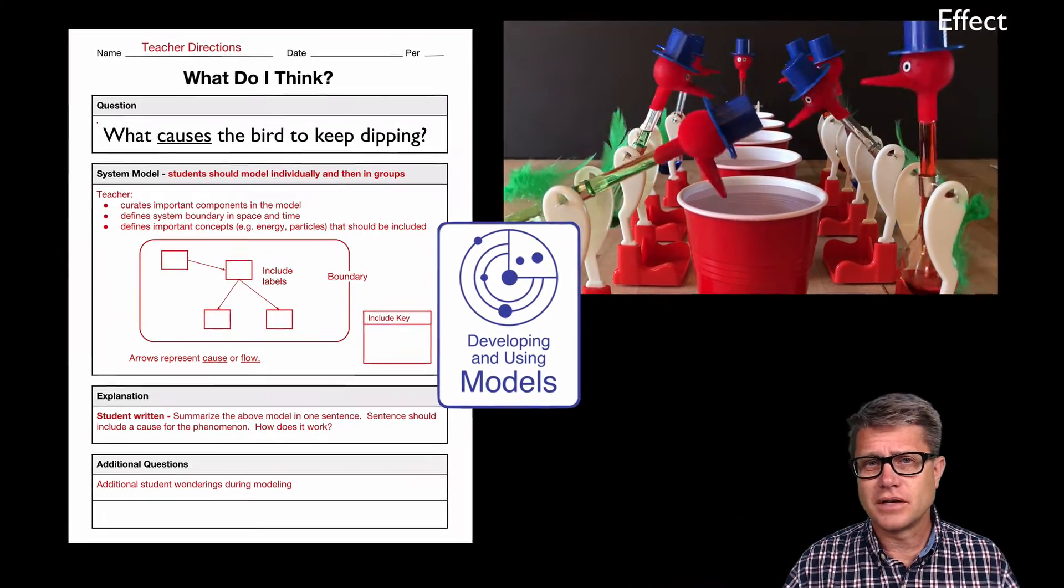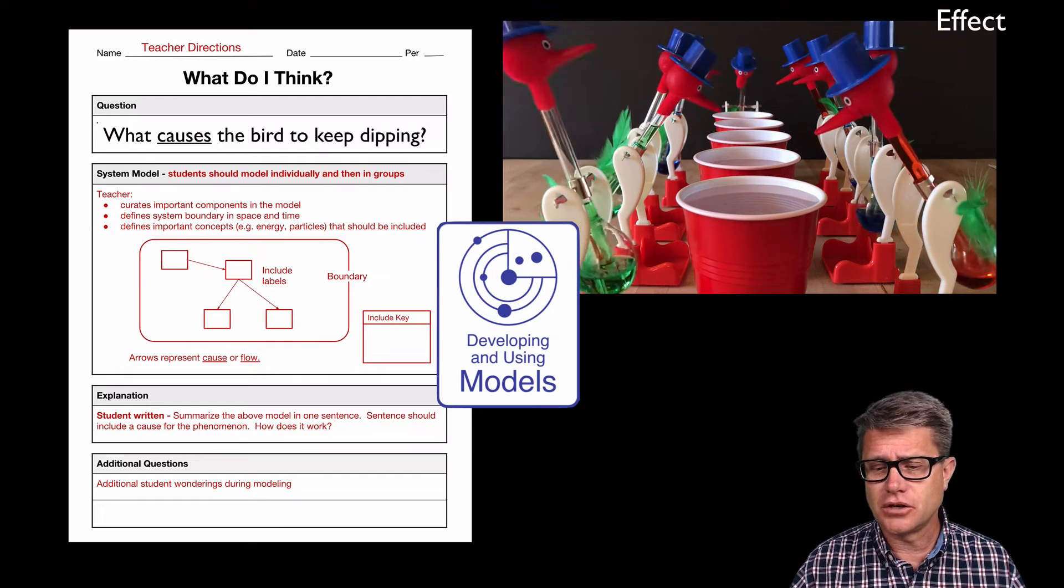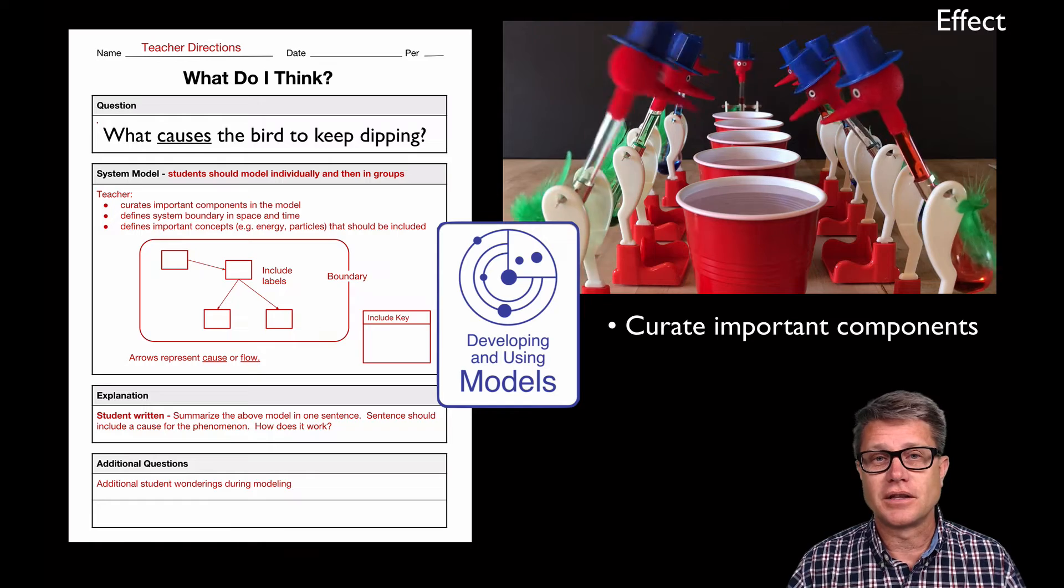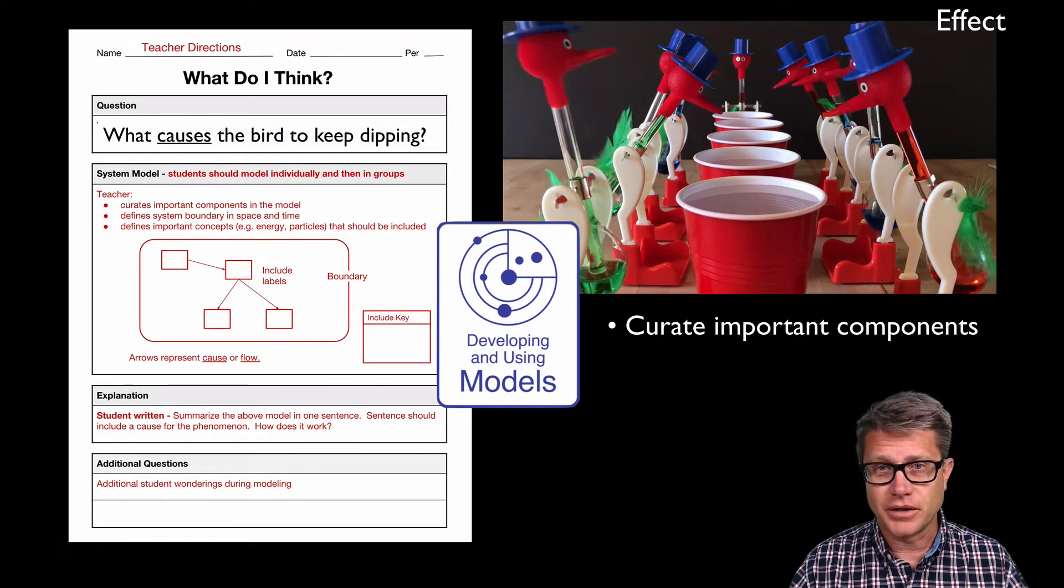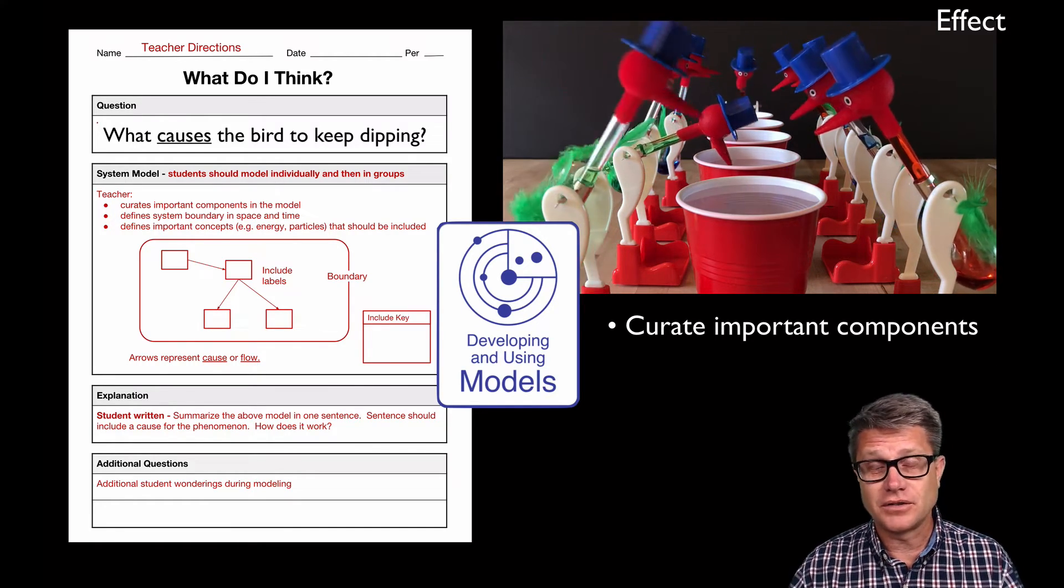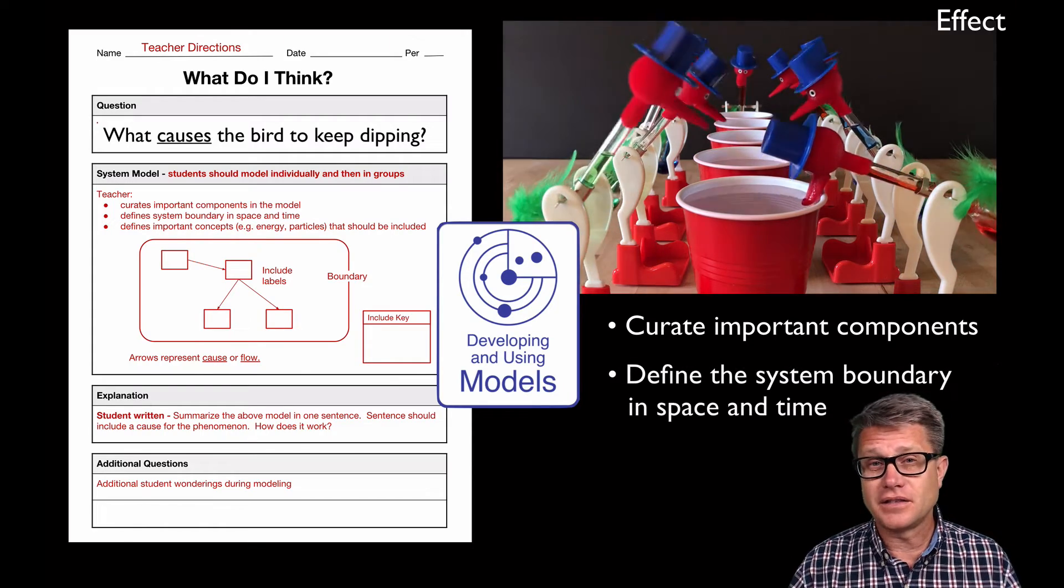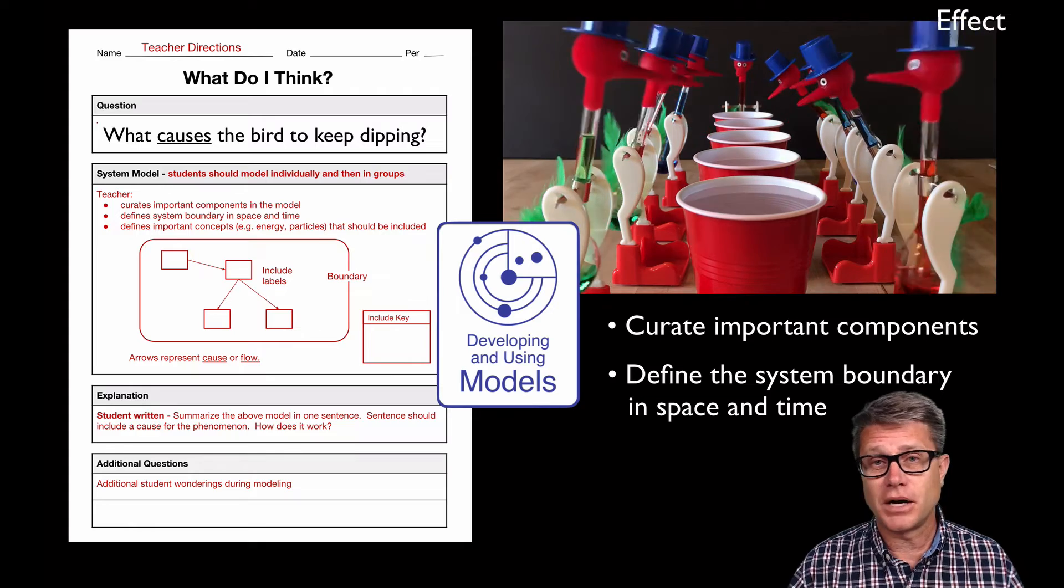Now it's important that since they're going to be drawing a model or a system model, that you curate the important parts that you want in that model. So in this case, if we're looking at this dipping bird, I might tell students that I want the bird included in the model, that cup that they're dipping into, and maybe the surroundings are important as well. And then you want to define the system that you want them to create a model for.